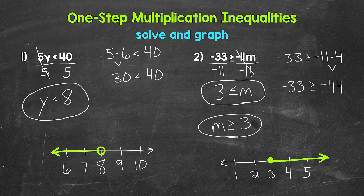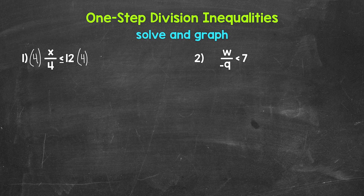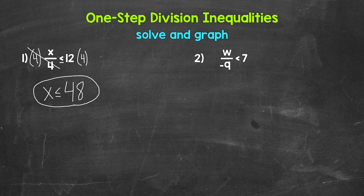So there are our multiplication examples. Let's move on to division. Number one: we have x divided by four is less than or equal to 12. Since x is being divided by four, we need the inverse operation of division, which is multiplication. So let's multiply both sides of the inequality by four. The fours cancel out on the left, X is now isolated, and 12 times four gives us 48. So x is less than or equal to 48 — any value less than or equal to 48 is a solution.